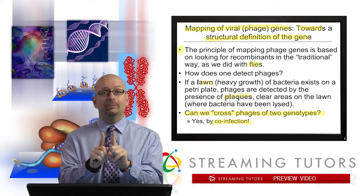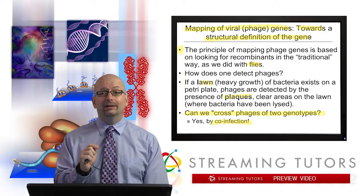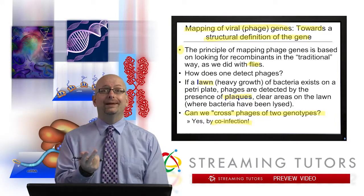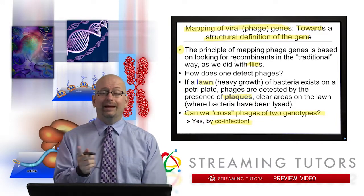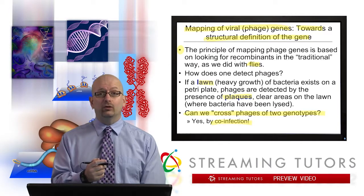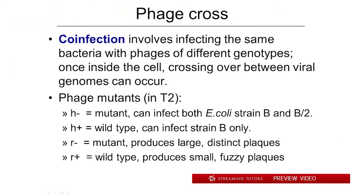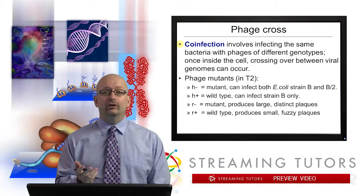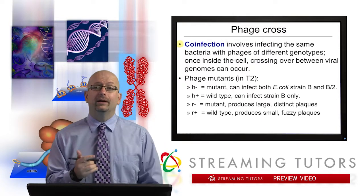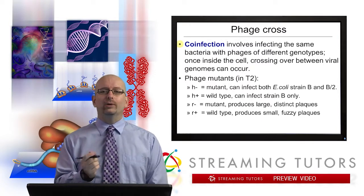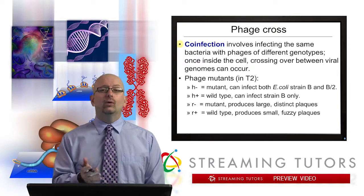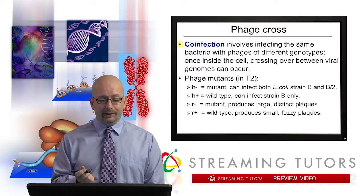It's not sex, but it's simulating that type of situation — at least in the sense that you have two chromosomes, if you want to call them that, in a position to exchange parts and undergo crossing over. So co-infection — it's good to know that term — you're infecting the same bacterium with phages of different genotypes. Once inside the cell, meaning once the DNA goes into the cell, crossing over can occur between viral genomes.